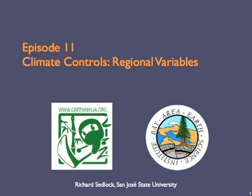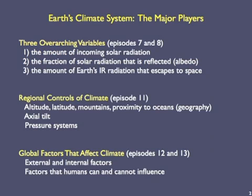Hi, this is Richard Sudlock. Welcome back to the Green Ninja course on climate science. This is the first of several episodes that examine factors that affect climate and produce changes in climate. I've divided the major players in the climate system game into overarching variables, regional controls, and global factors. I talked about things listed as overarching variables during the discussion of Earth's atmosphere and energy balance back in episodes 7 and 8 of this series.